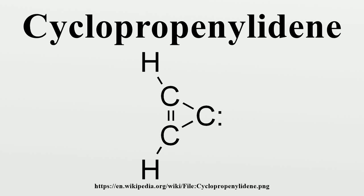Cyclopropenolidine, or c-C₃H₂, is an aromatic molecule belonging to a highly reactive class of organic molecules known as carbenes. Due to its reactivity, cyclopropenolidine is only seen terrestrially in the laboratory. However, it is found in significant concentrations in the interstellar medium due to the extreme environment. The linear isomer of c-C₃H₂ is also found in the ISM, but its column density is generally about an order of magnitude lower.